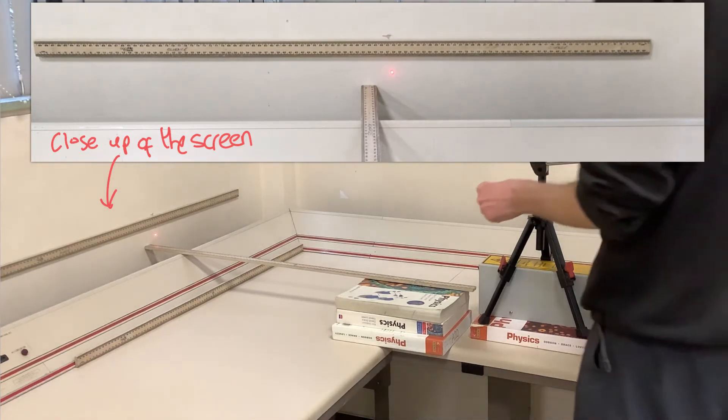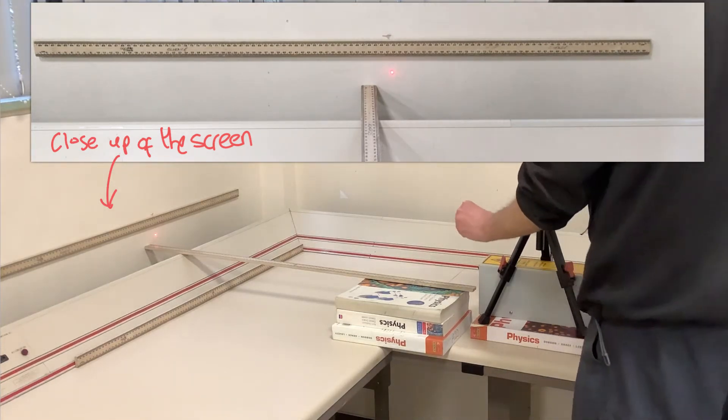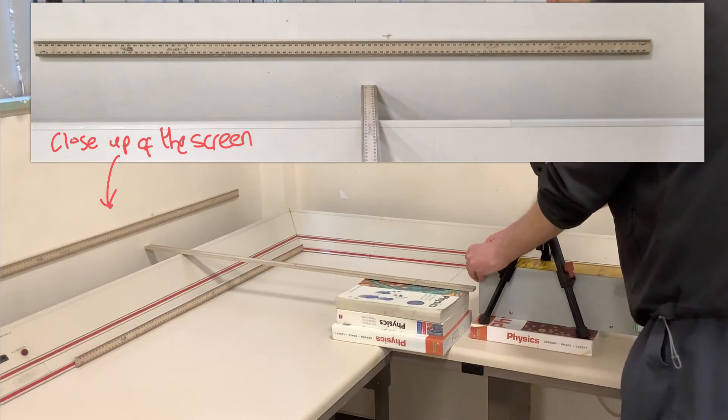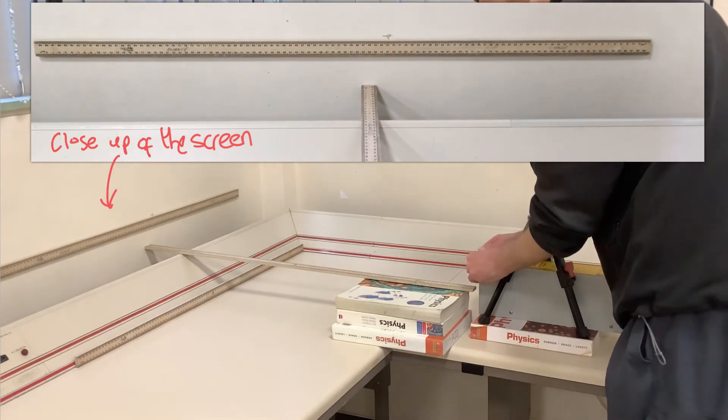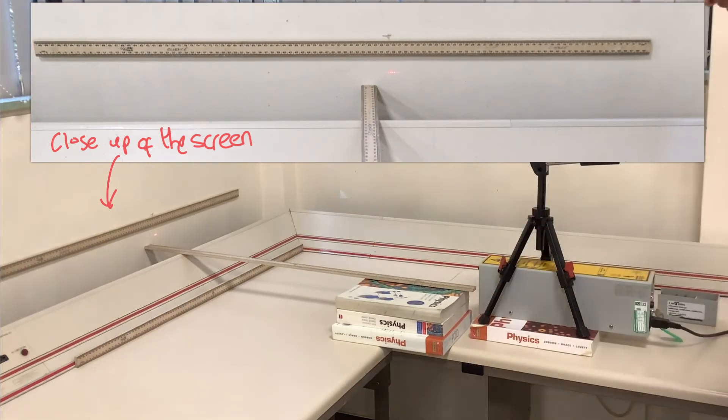Now let's add in a double slit, the 0.1 millimeter double slit that we used before, and by spending a moment lining that up, maybe you can just see the fringe pattern on the wall. I think I need to turn the lights off.